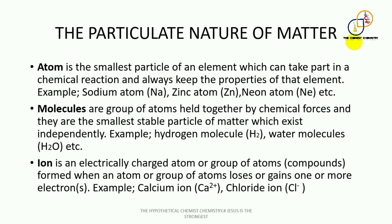The last building block is the ion. An ion is an electrically charged atom or group of atoms, formed when an atom or group of atoms loses or gains one or more electrons. Take note that when we talk about an ion, it is an electrically charged atom or group of atoms in the form of a compound. An example is the calcium ion, which has a positive charge of 2+, and the chloride ion, which has a negative charge of 1−.